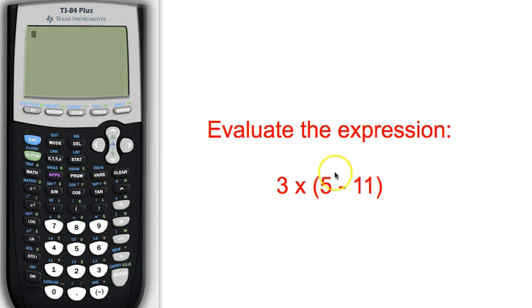However, that 5 minus 11 is in parentheses, which shows us that we need to evaluate this first. So this is 3 times quantity 5 minus 11.